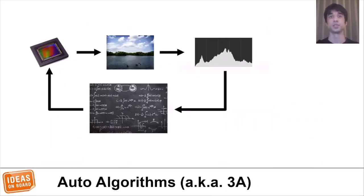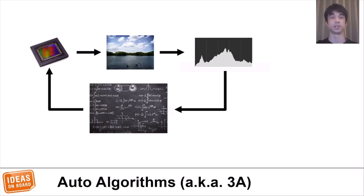In addition to the image capturing pipeline, there is also 3A: auto-exposure, auto-white balance, and auto-focus that we have to deal with. The luminance of the scene in front of the camera typically varies constantly, which requires adjusting the integration time and gain of the sensor accordingly, to produce an image that is neither underexposed nor overexposed.